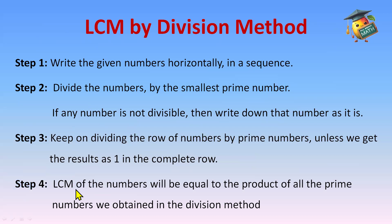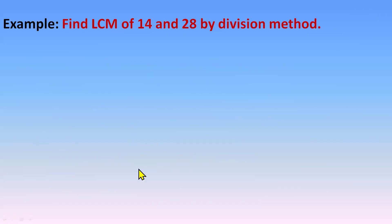After that, the LCM will be equal to the product of all the prime numbers we got from the division method. Let's understand this better with an example: find the LCM of 14 and 28 by the division method.